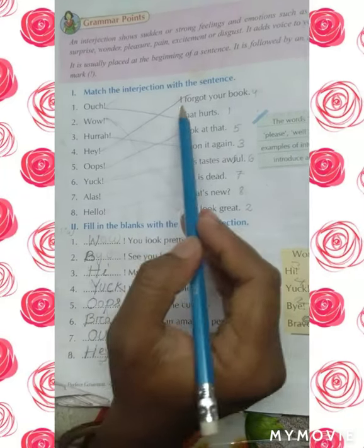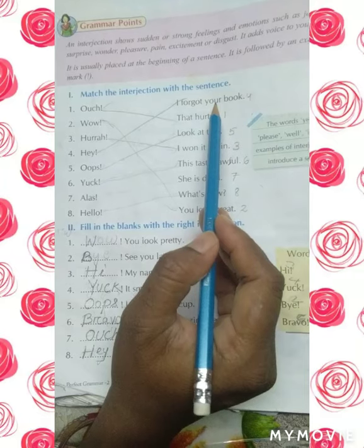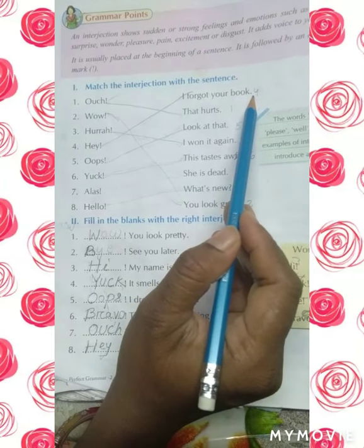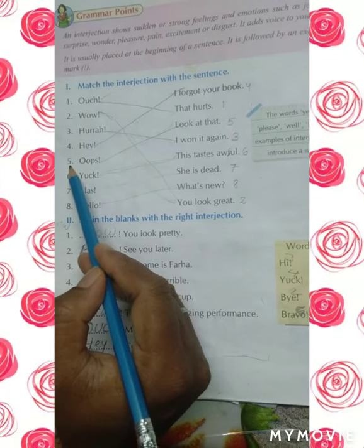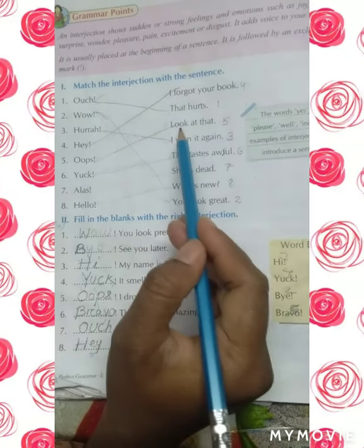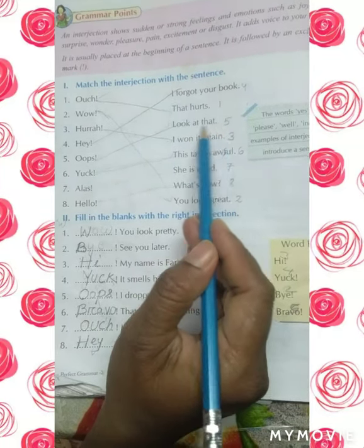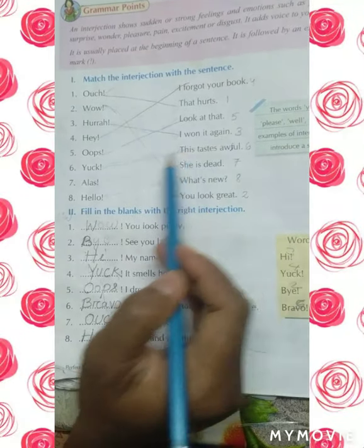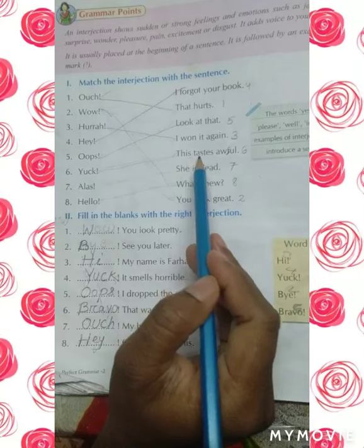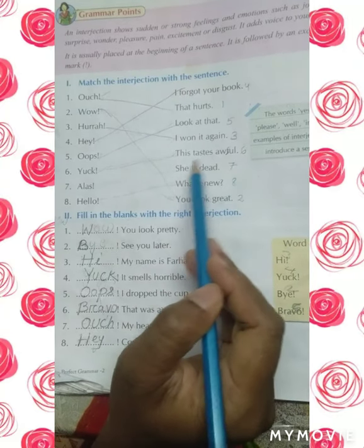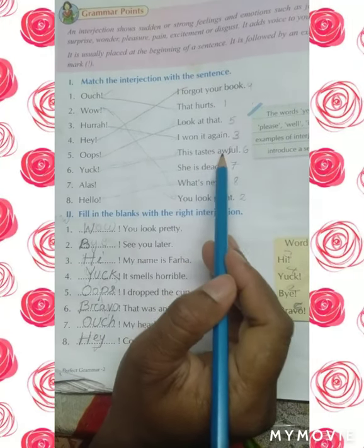Number five: Oops - look at that. Number six: Yuck - this tastes awful.